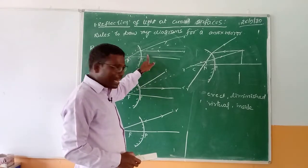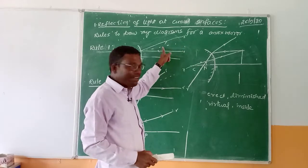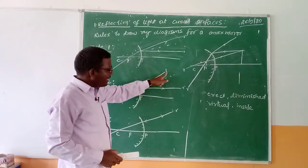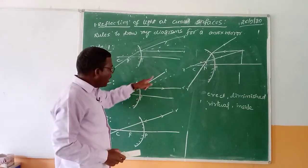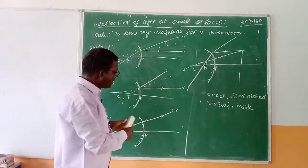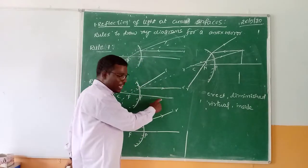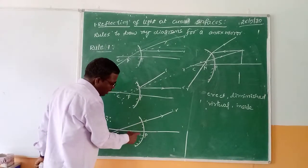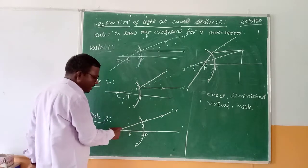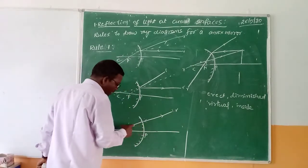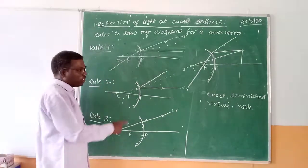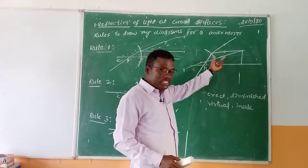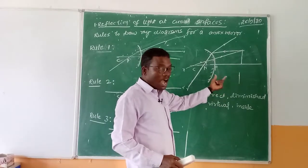These are some rules on how to draw the ray diagram for a convex mirror. In Rule 1, we learned that a light ray traveling parallel to the principal axis gets reflected and travels as if it passes through the focus. In Rule 2, a light ray getting incident directed toward the focus — the reflected ray will travel parallel to the principal axis. In Rule 3, a light ray getting incident toward the center of curvature again gets reflected back through the center of curvature, so there is no deviation in it.